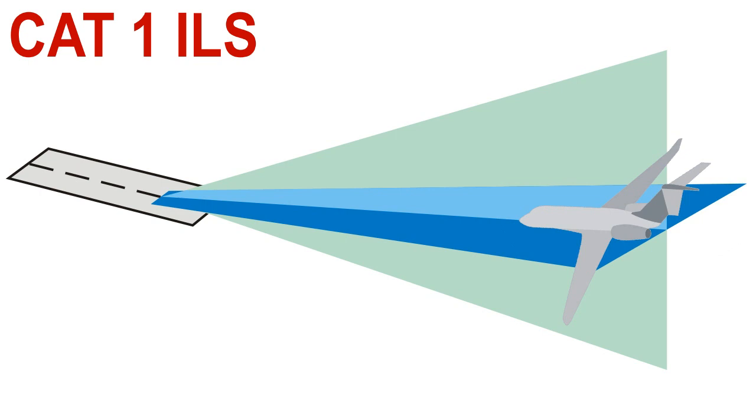A standard Category 1 ILS will have a visibility not below limit of 550 meters and a decision altitude which will equate to 200 feet above the ground.